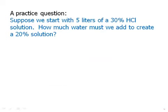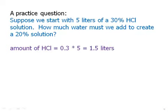Here's another practice question. Pause the video, and then we'll talk about this. Suppose we start with five liters of a 30% HCl solution, how much water must we add to create a 20% solution? Alright, well this is interesting. So the first thing we're going to figure out is how much solute do we have. Again, 30%, which is 0.3 times 5, we have 1.5 liters.